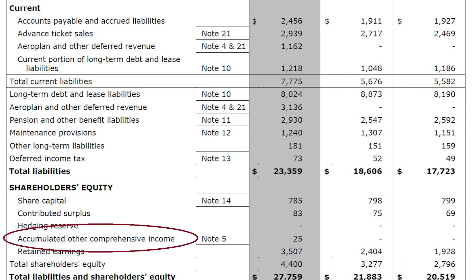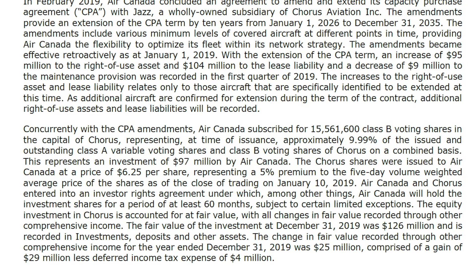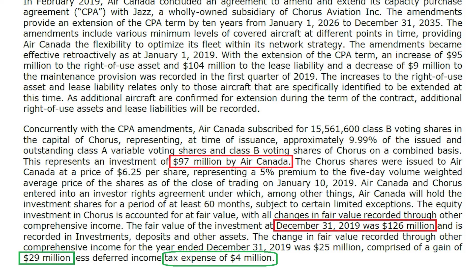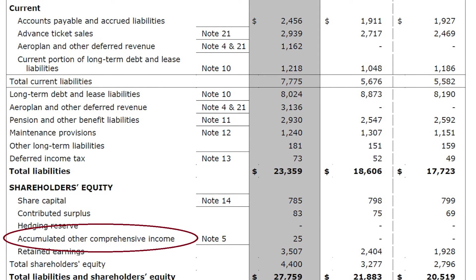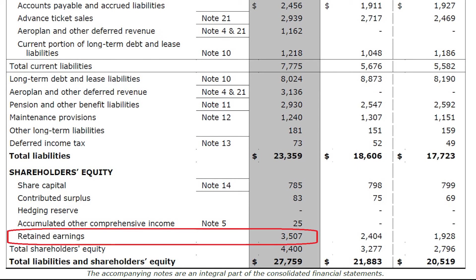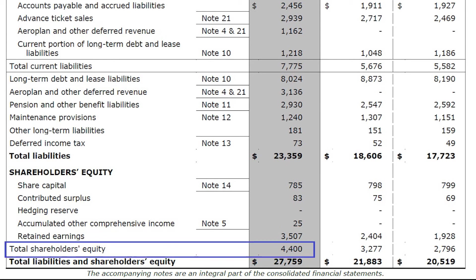Accumulated other comprehensive income relates to the Chorus Aviation investment: Air Canada invested 97 million dollars and the market value is now 126 million, a profit of 29 million. After 4 million dollars in taxes, the net profit is 25 million dollars, recognized here in shareholders' equity. Retained earnings are 3.5 billion dollars — Air Canada has chosen not to pay these out as dividends but to keep them to drive company growth. This gives a total shareholders' equity of 4.4 billion dollars.